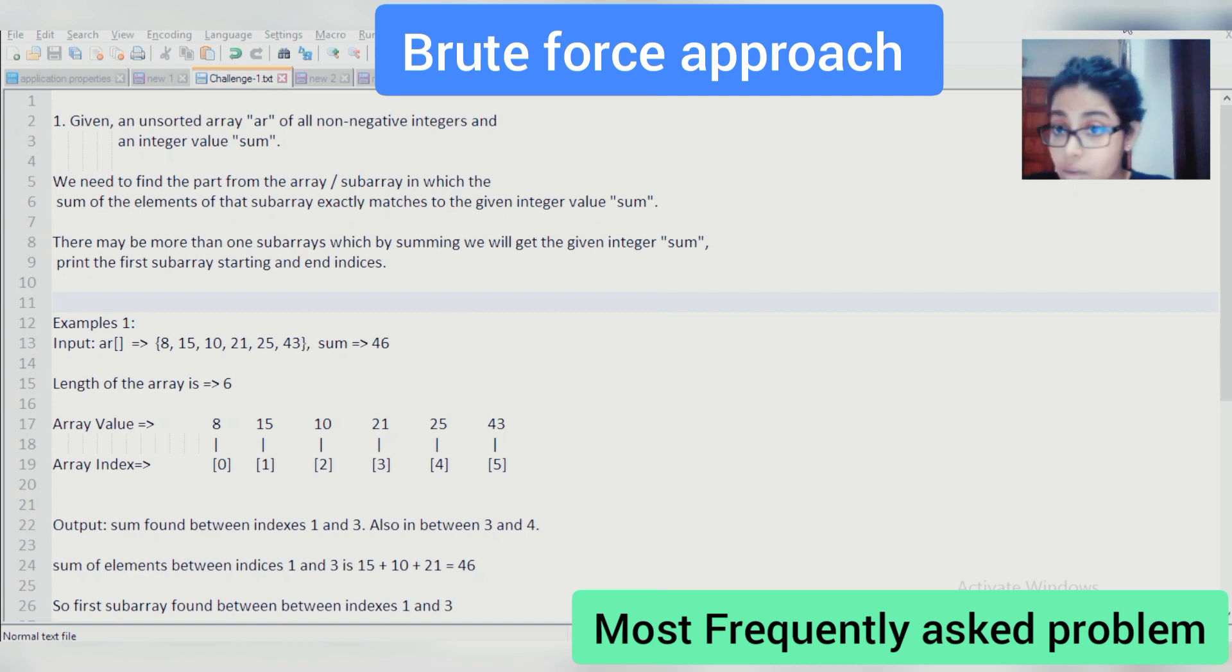Suppose you are given one unsorted array of all non-negative integers, and along with that, an integer value sum is given to you. Now you need to find out the part from that array, or rather subarray, which the sum of the elements of that subarray exactly matches the given integer value sum. There might be cases that you will be able to find out more than one such subarray where the sum of those elements matches with the given integer value sum. But here what you need to find out is the first subarray that you will be getting while scouting through—the first subarray starting and end index you have to print.